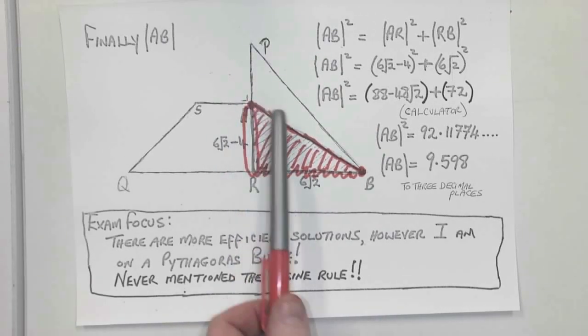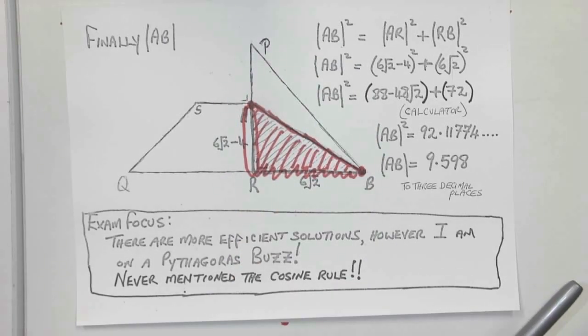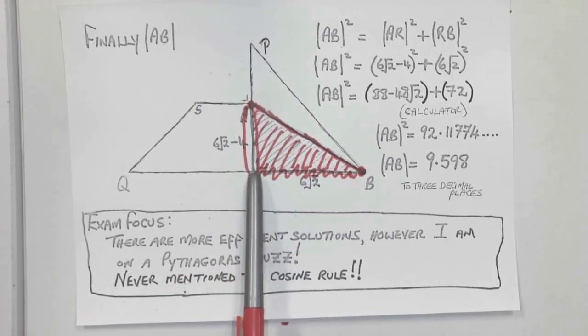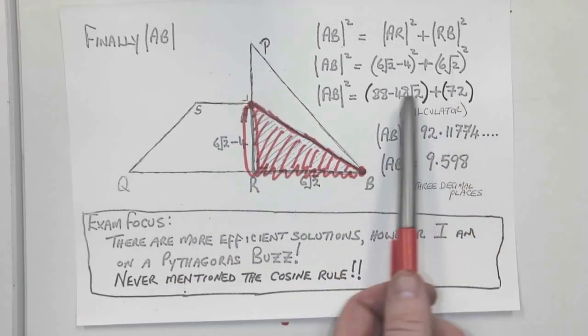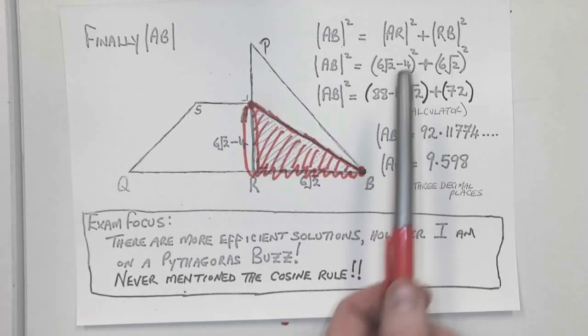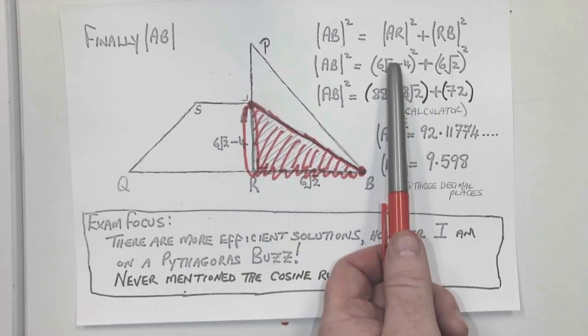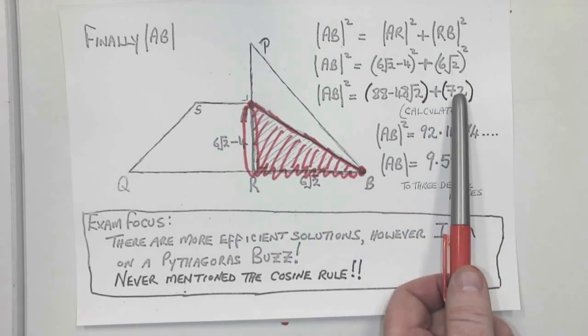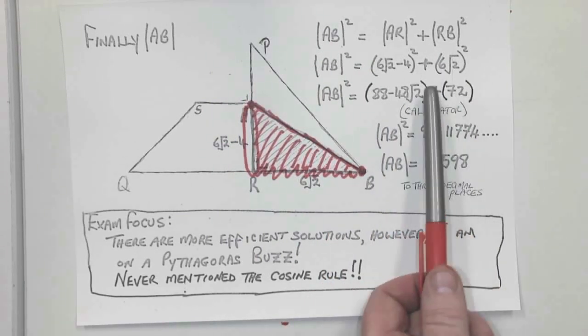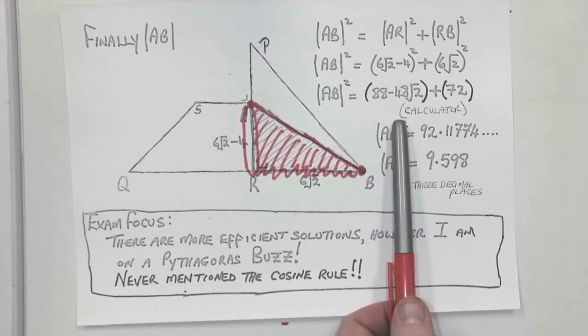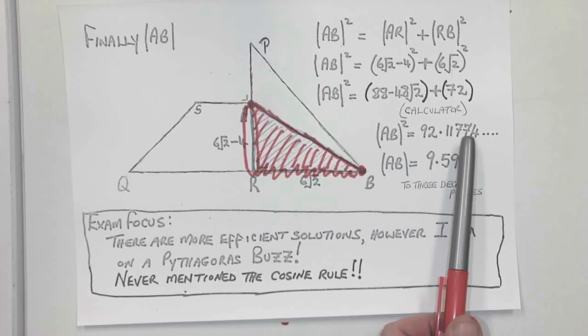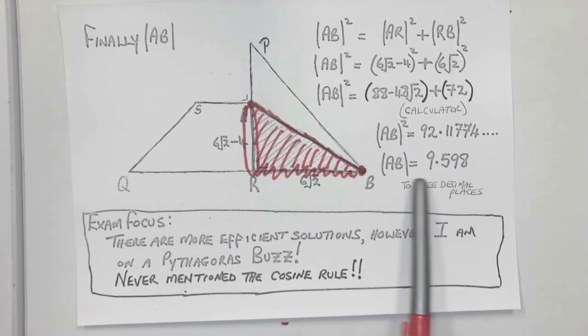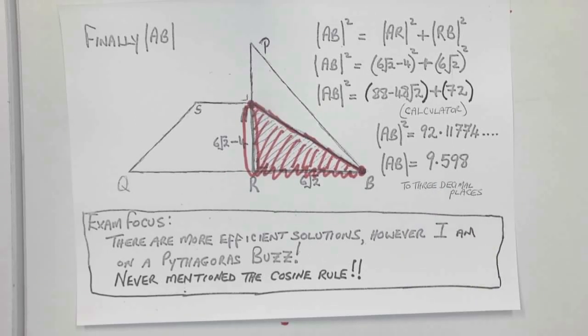So if we look at this, then AB squared is equal to AR squared plus BR squared. So AB squared is equal to, what's AR? 6 root 2 minus 4, that's going to be calculator work in a minute. And 6 root 2 squared, that's calculator work for me as well. When I add them up using the calculator, I get AB squared is 92.11774. Hit the square root and to 3 decimal places, 9.598.